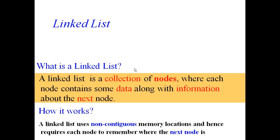Today we are going to understand the linked list data structure in detail. A linked list is a collection of nodes where each node contains some data along with information about the next node. A linked list uses non-contiguous memory locations, and hence requires each node to remember where the next node is.